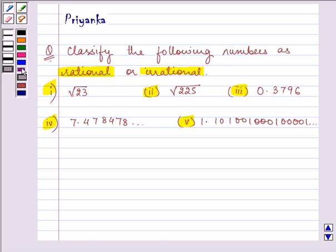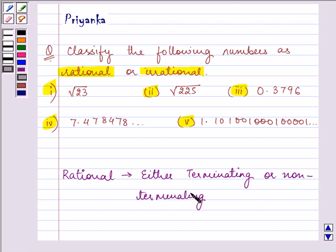So let us first know what are rational and what are irrational numbers. Rational numbers are those numbers which are either terminating or non-terminating recurring decimals.